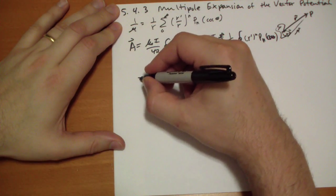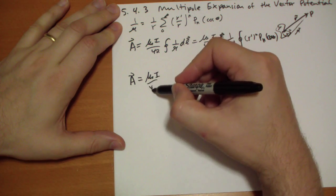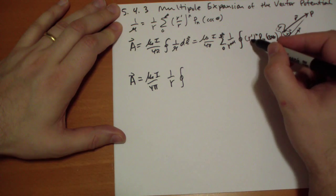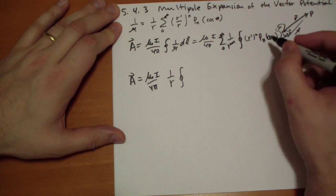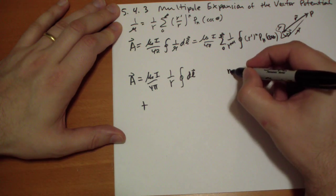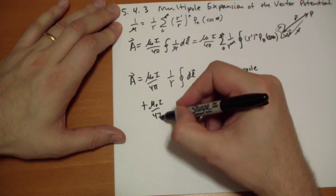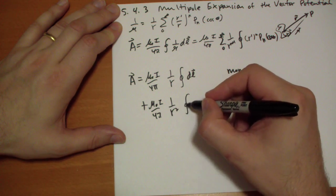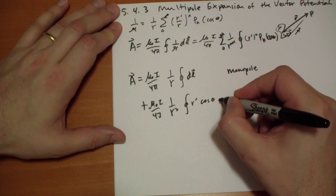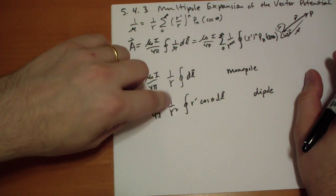Which, when you expand this out, looks like the monopole term. So we have μ₀i over 4π times the monopole term, which is 1 over r, the closed loop integral of dl. This is the 0th power. Okay, this is the monopole. Then the dipole term, 1 over r squared, the integral of r prime cos theta dl vector. This is the dipole. This is what you get when you have little loops of wire.